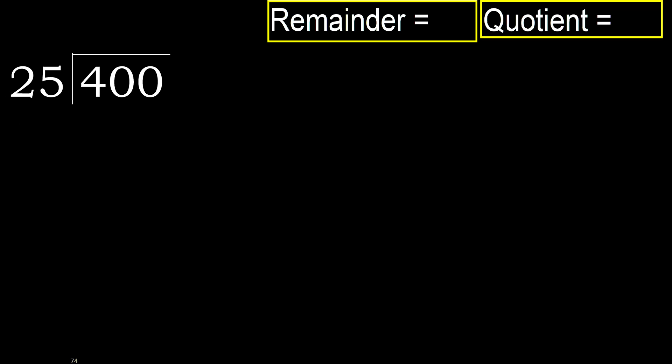400 divided by 25. 4 is less, therefore next. 40 is not less, therefore work with 40.